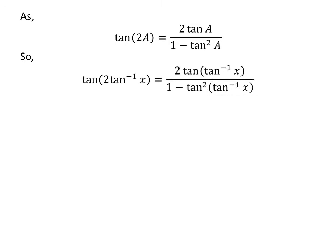So, tangent of 2 times arctangent of x is equal to 2 times tangent of arctangent of x upon 1 minus square of tangent of arctangent of x.